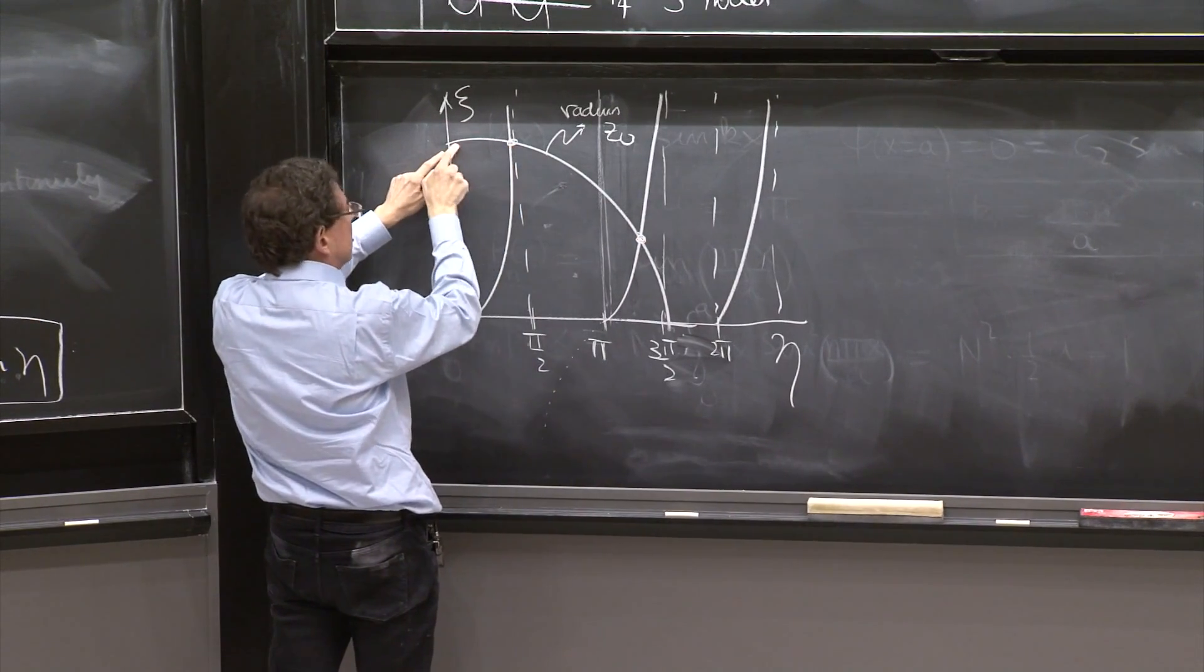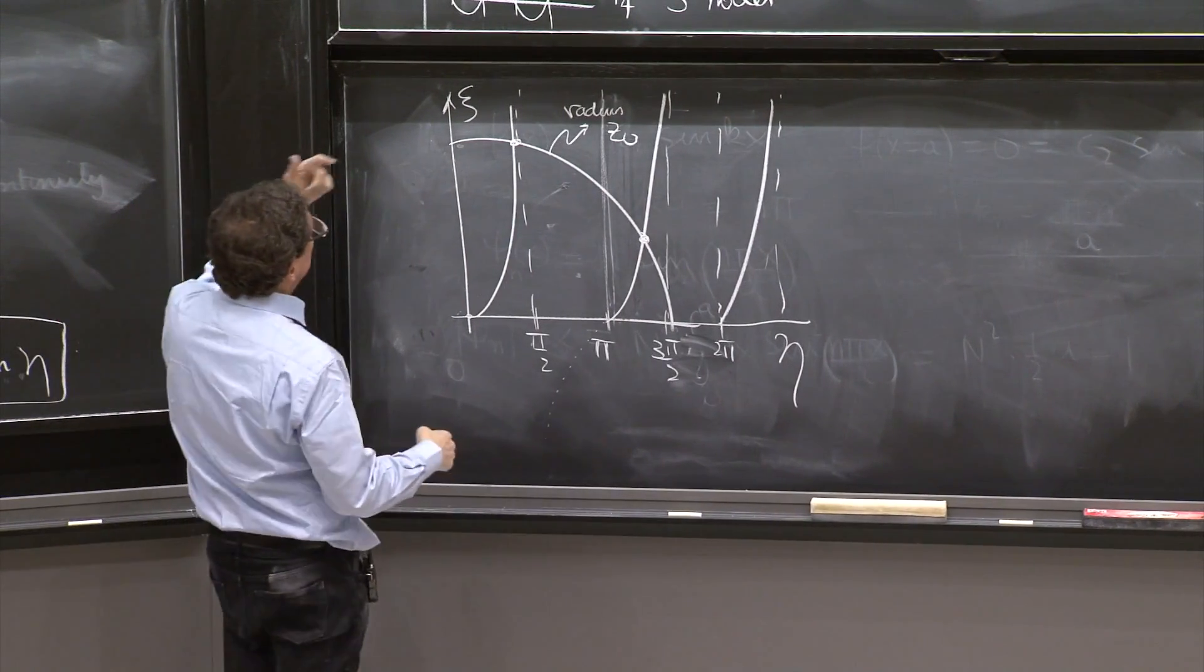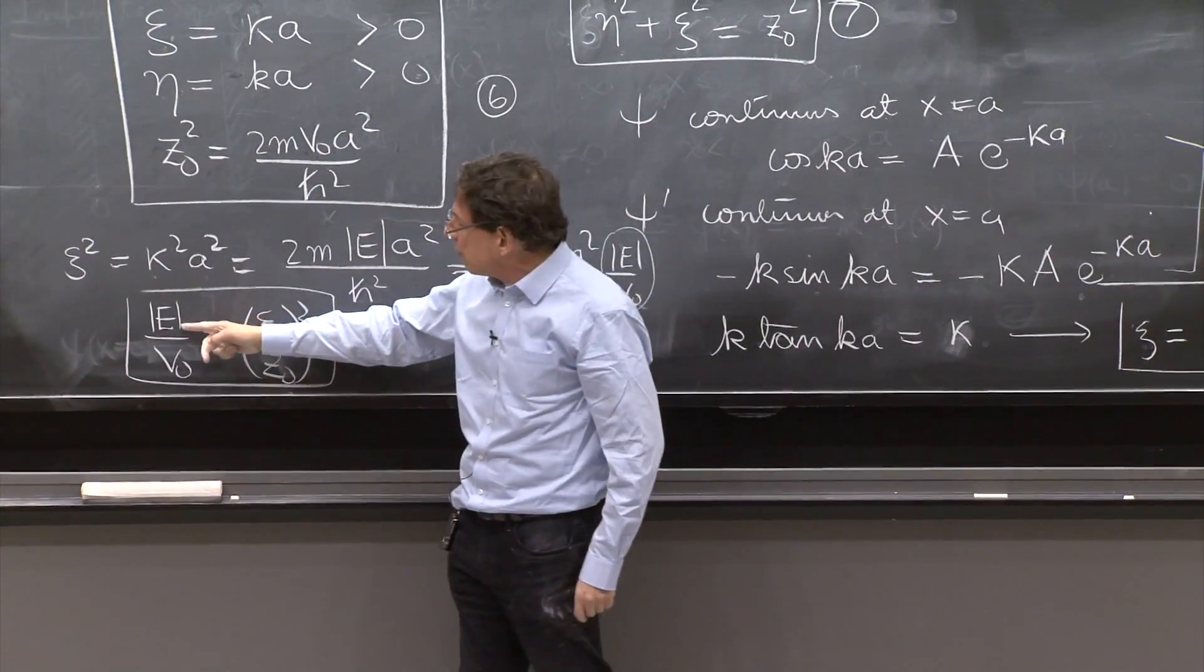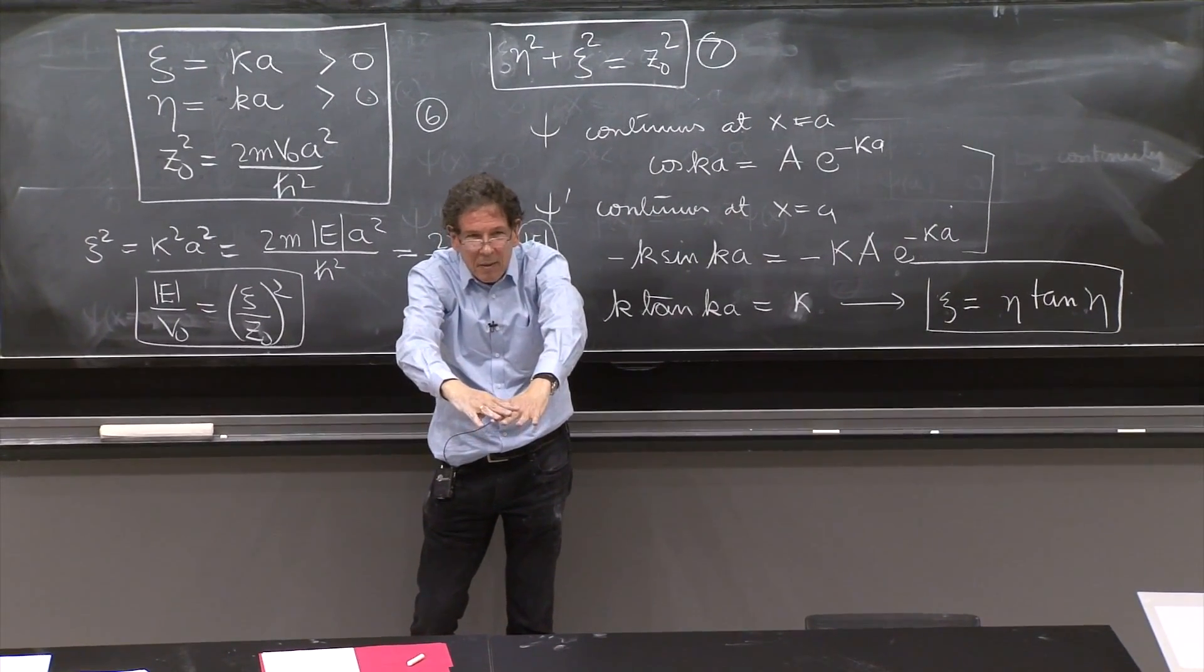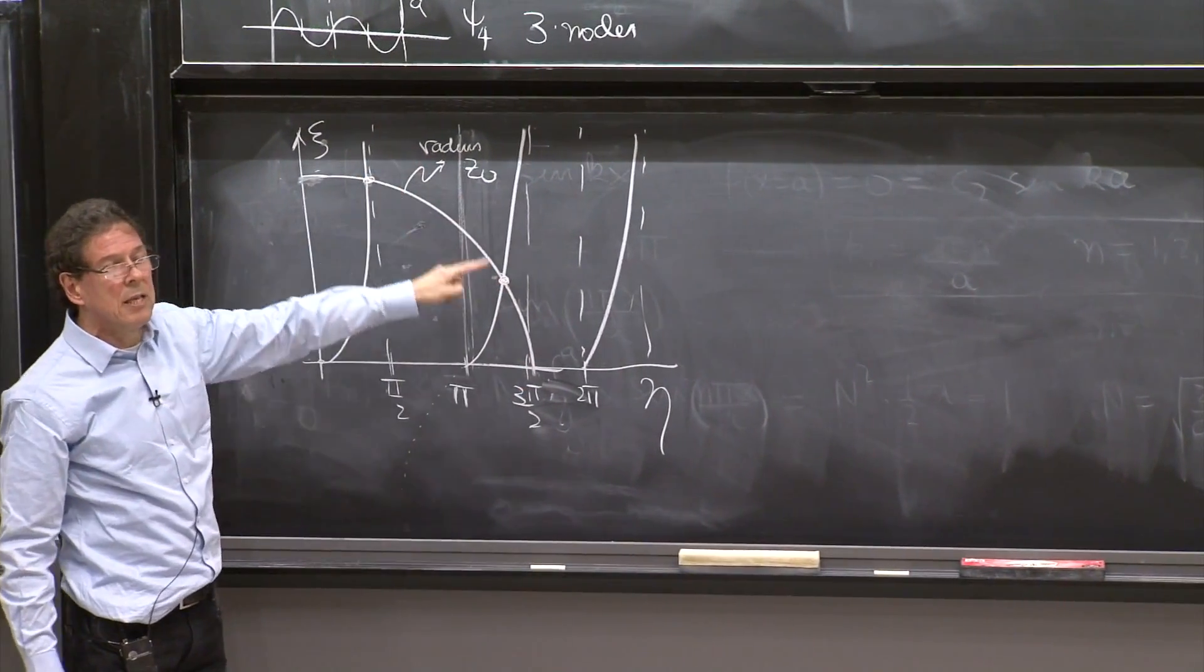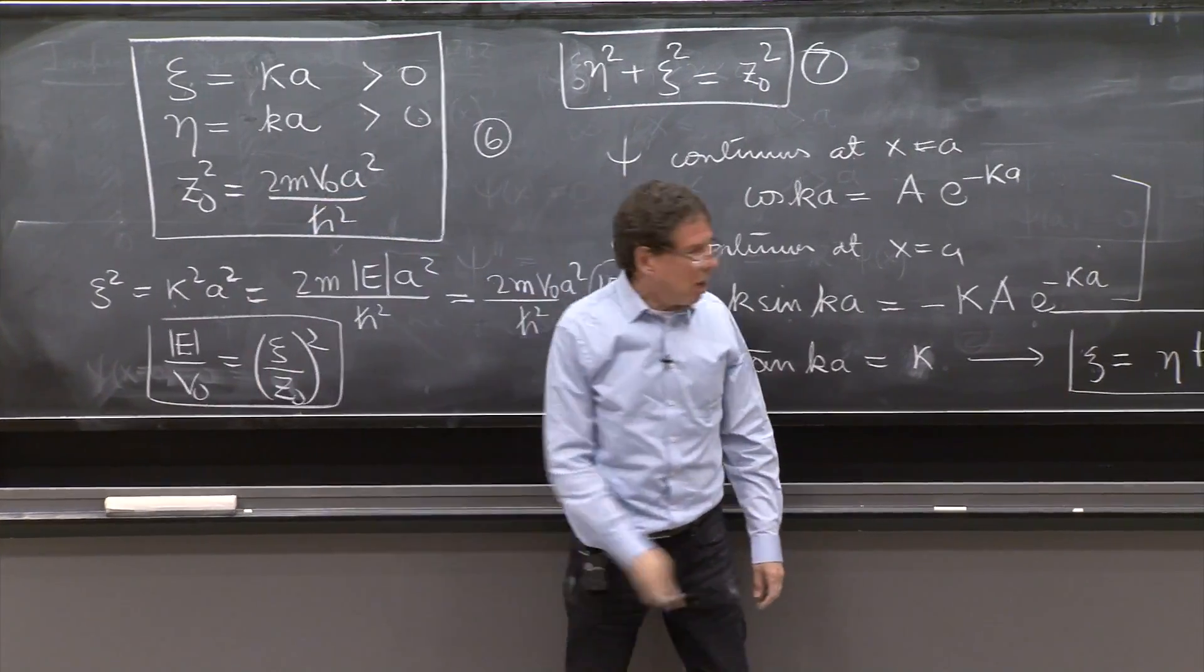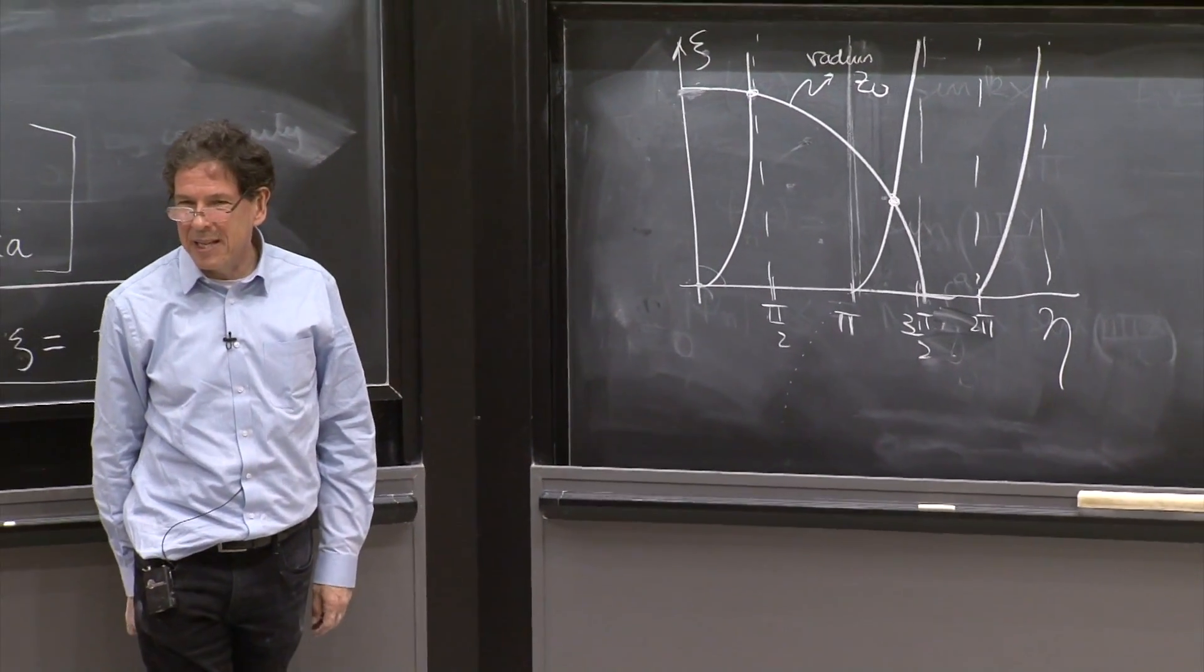These points represent values of psi and values of eta, from which you could read the energy. In fact, you can look at this state and say, that's the state of largest psi, and therefore, it's the state of largest absolute value of the energy. It's the most deeply bound state. Then this is the next deeply bound state. There's two bound states in this case. Interestingly, however shallow this potential might be, however small z0, the circle will always have one intersection. So there will always be at least one solution.